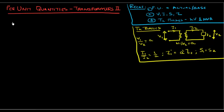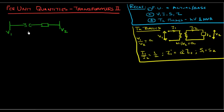Now let's get to our example for today, which will deepen our understanding of how we use per-unit quantities and how that makes life easier when there are transformers in the circuit. Let's assume a two-bus system: bus one is connected to a transformer, with an impedance in series on the secondary side, and that gives us our secondary bus.